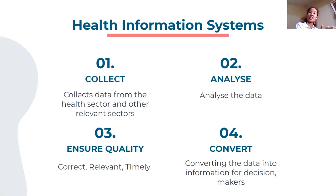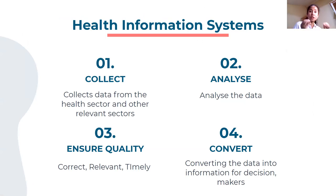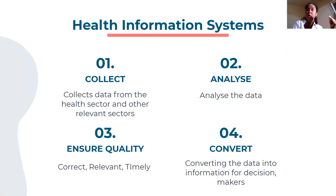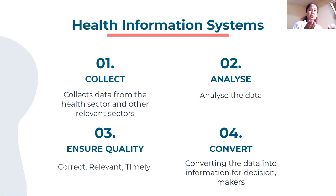What are the functions of your health information system? Number one, it collects data. It collects quality data from the health sector and other relevant sectors. We have a saying: garbage in, garbage out. In health information systems, if you input garbage, what comes out is also garbage. So it is very important that the data you collect is correct. That's the first function.